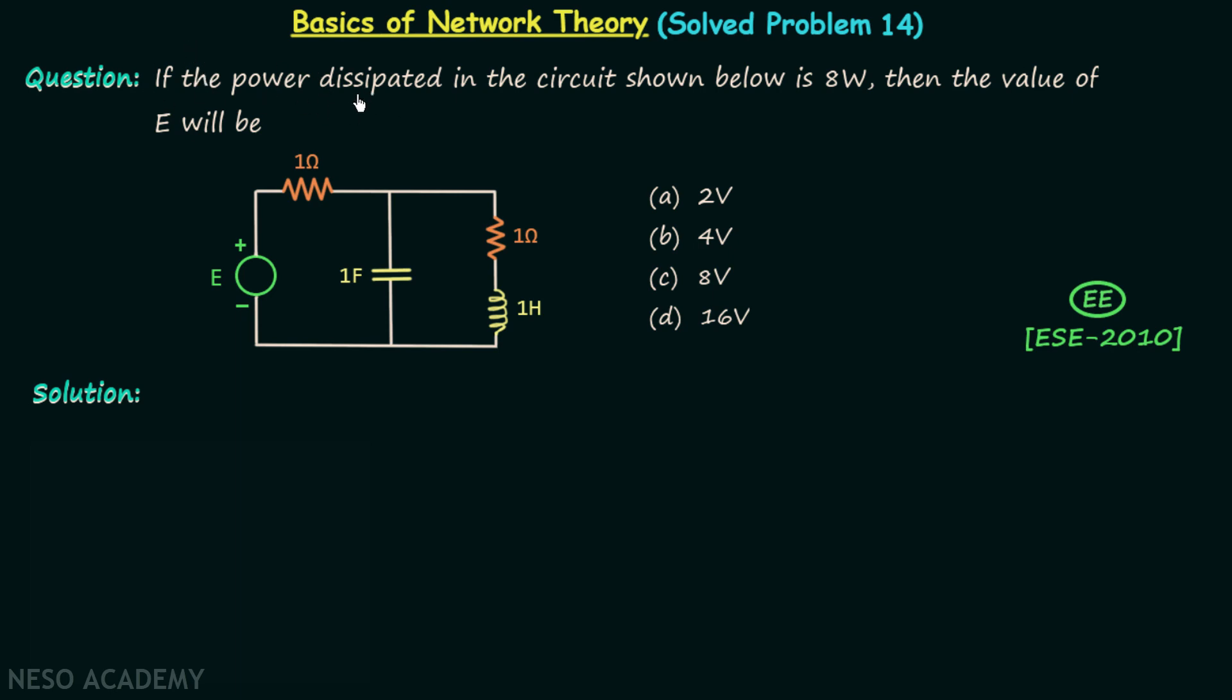If the power dissipated in the circuit shown below is equal to 8 watts, then the value of E will be.